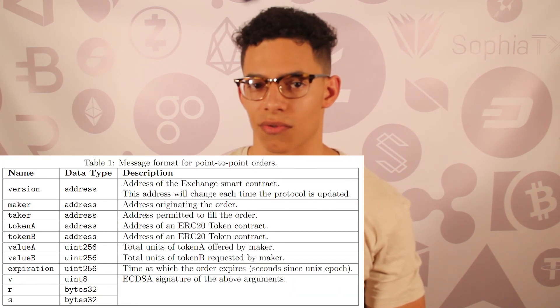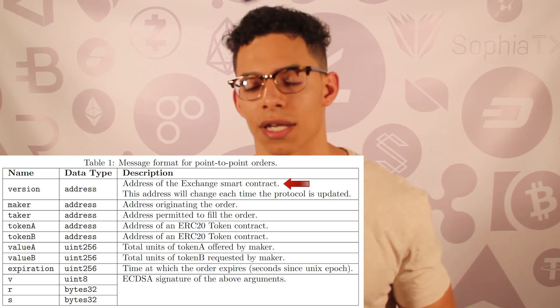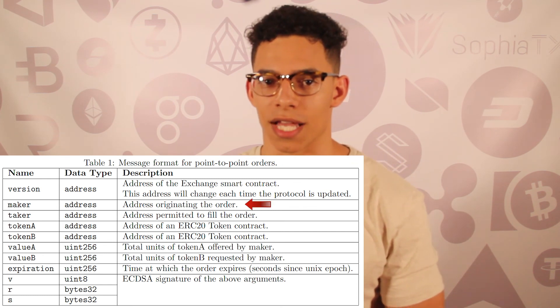The off-chain order relay and on-chain settlement model combines the efficiencies of state channels with the quick finality of on-chain order books. Cryptographically signed orders are broadcast off the blockchain, and an interested counterparty may inject one or more of these orders onto a smart contract to execute trades trustlessly on the blockchain. This model enables two different types of orders: point-to-point orders and broadcast orders. Point-to-point orders are used for the 0x OTC exchange, where OTC refers to over-the-counter trades done in person or off normal exchanges.